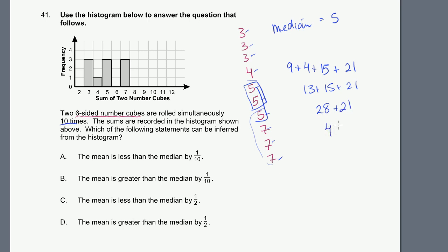28 plus 21 is 49, and if we have to divide that by 10, we get an average. The average is going to be equal to 4.9. So our average is 4.9. Our median is 5. So our average is 1 tenth less than our median. Our mean, when we just add up all the data points and divide it by 10, is 1 tenth less than the median. The mean is less than the median by 1 tenth. That looks right. Choice A.